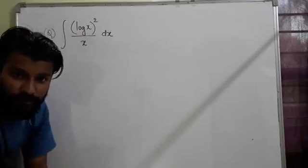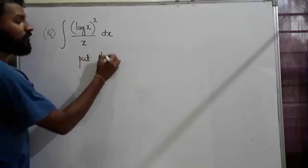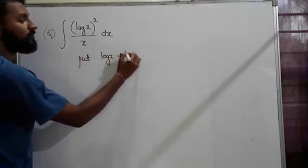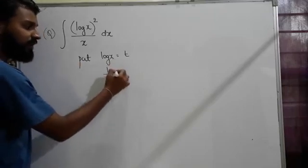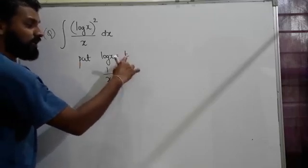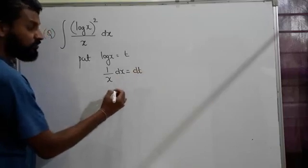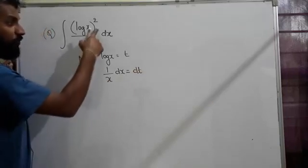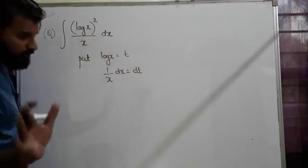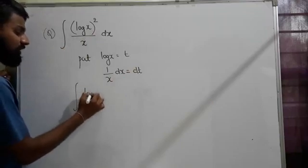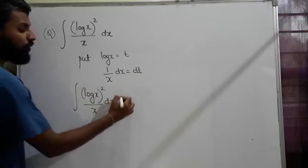Put log(x) = t. Differentiating this: 1/x, where x is the variable. dx we write for x, dt we write for t. So 1/x dx = dt.